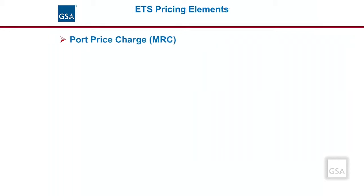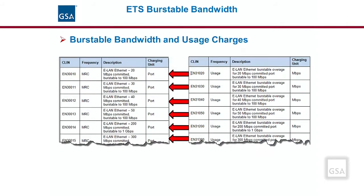If the agency exceeds the committed bandwidth, they will receive an overage charge for the extra bandwidth used. This pricing model is similar to cell phone data plans. As shown on the slide, for each Ethernet burstable MRC CLIN there is a corresponding burstable overage auto-sold usage CLIN to simplify ordering. The charging unit for burstable overage is 1 Mbps for each of the committed data rates.